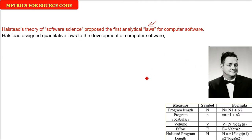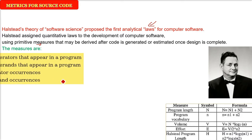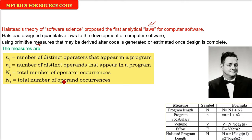Halstead assigned certain quantitative laws to the development of computer software. He said we can compute almost everything using just primitive measures, even if the code is generated or the design has been completed. The basis of Halstead theory or source code metrics is the number of operators and operands.